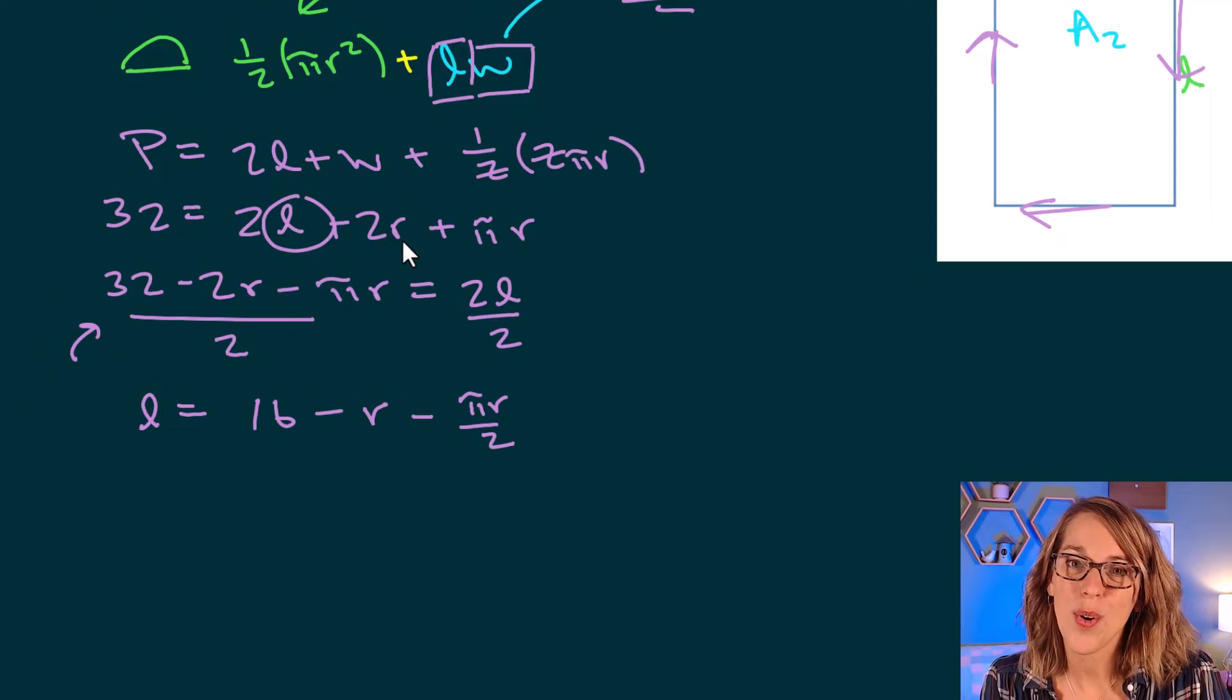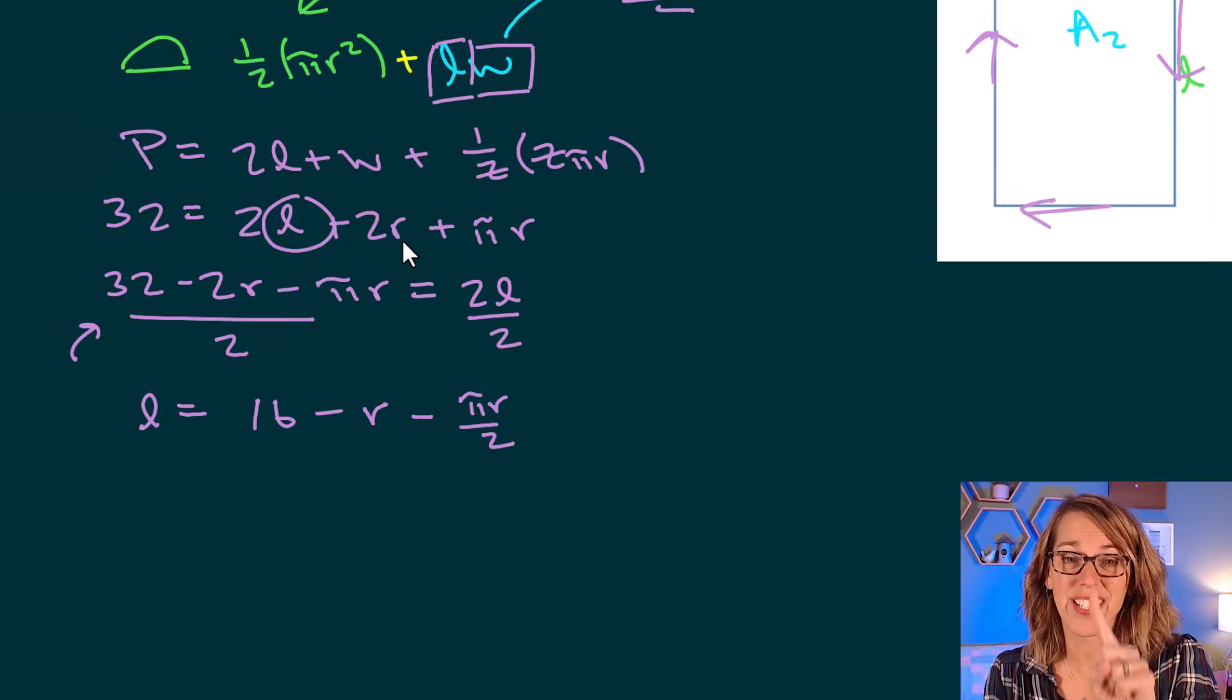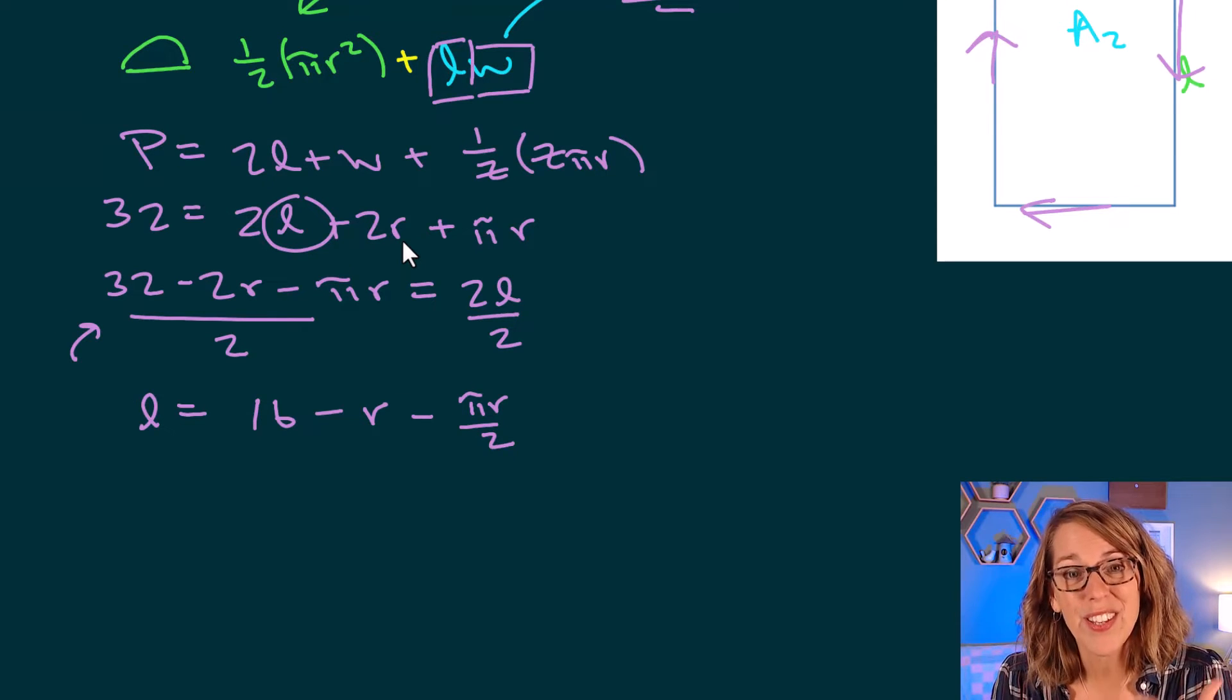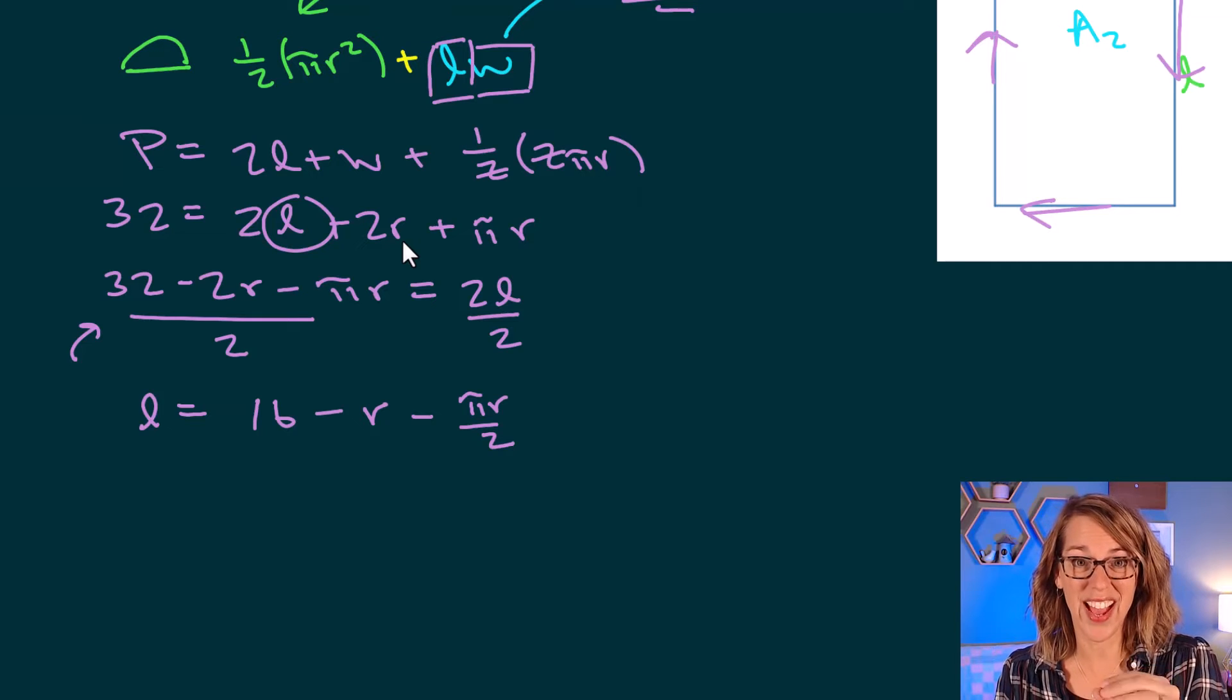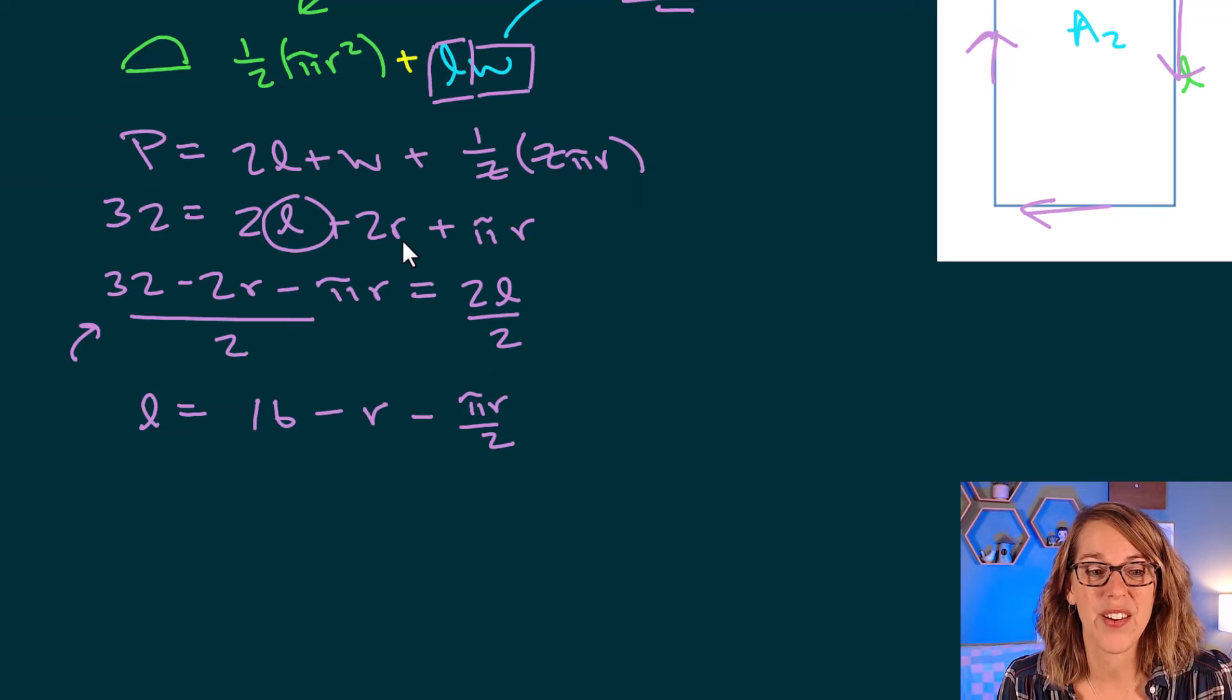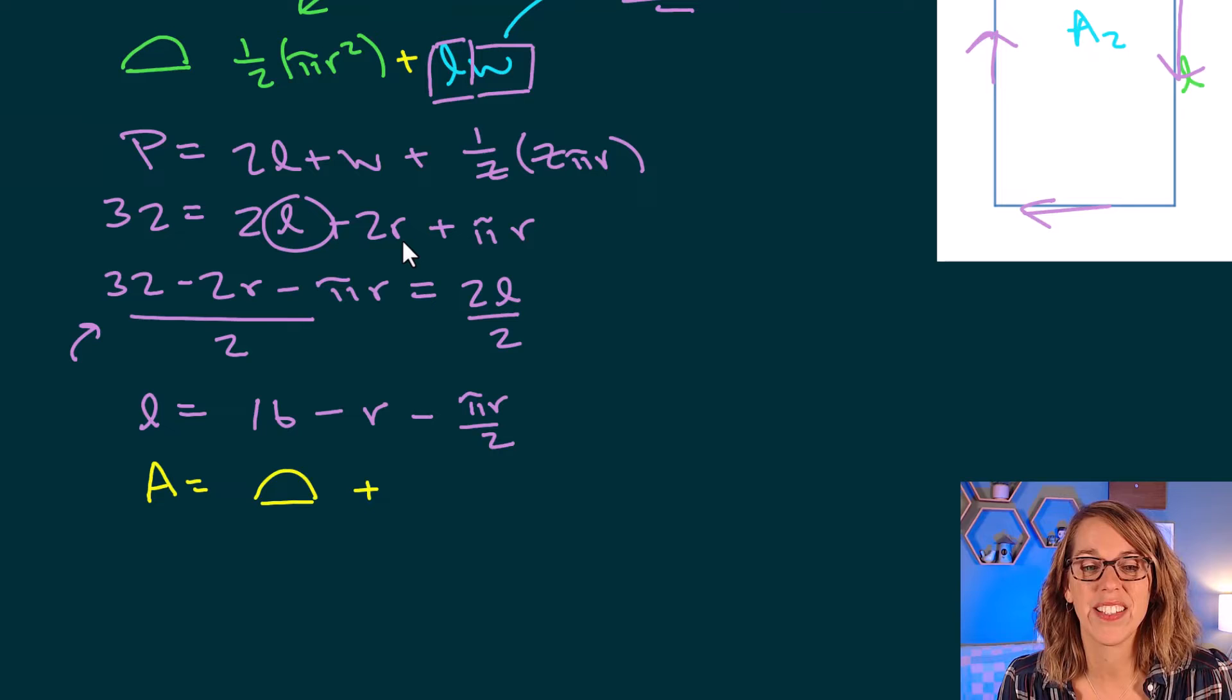Now we're ready to put our total area together in terms of a single variable, which means that our next step is going to be to take the derivative and set it equal to 0. That's the optimizing part. But first, let's go ahead and go back to that area.